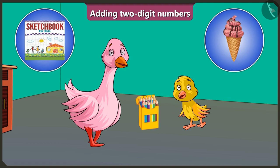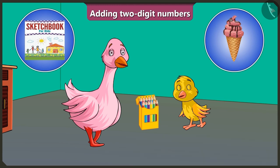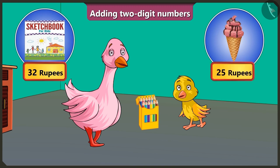Aunty, please give me some money to buy the two items. So, tell me how much money will you need to buy the two items? Thirty-two rupees for the sketchbook and twenty-five rupees for the ice cream.